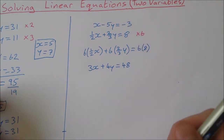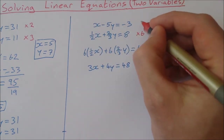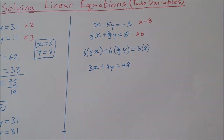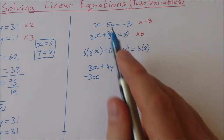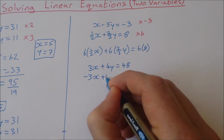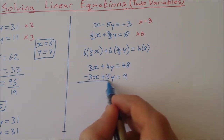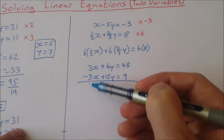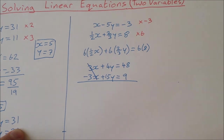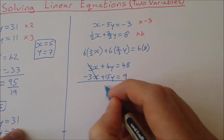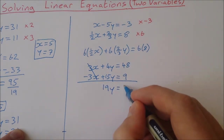I'm looking for opposite coefficients, so I'll multiply the first equation by minus 3. Minus 3 times x is minus 3x, minus 3 times minus 5y is plus 15y, and minus 3 times minus 3 is 9. Now I have opposite x coefficients, so adding the equations: 3x minus 3x is 0, 4y plus 15y is 19y, and 48 plus 9 is 57.